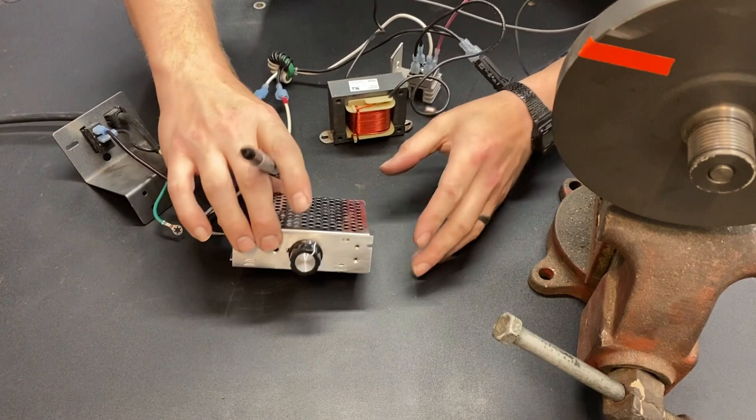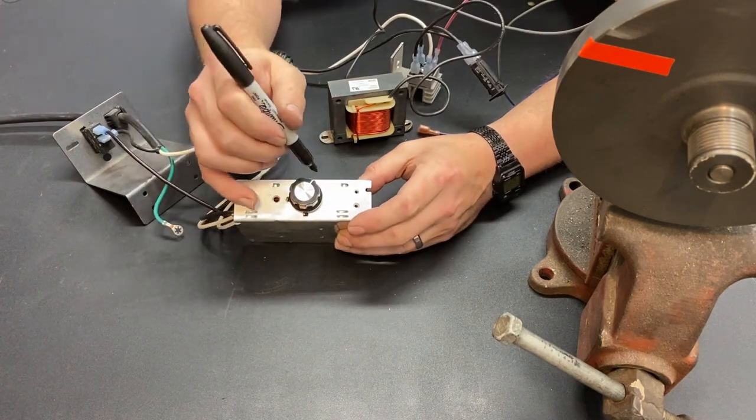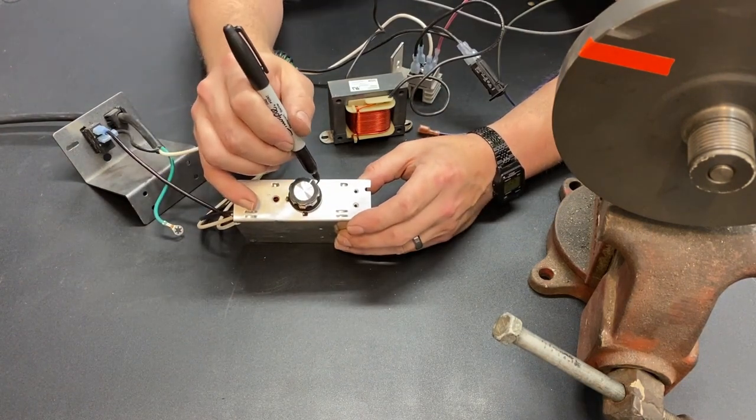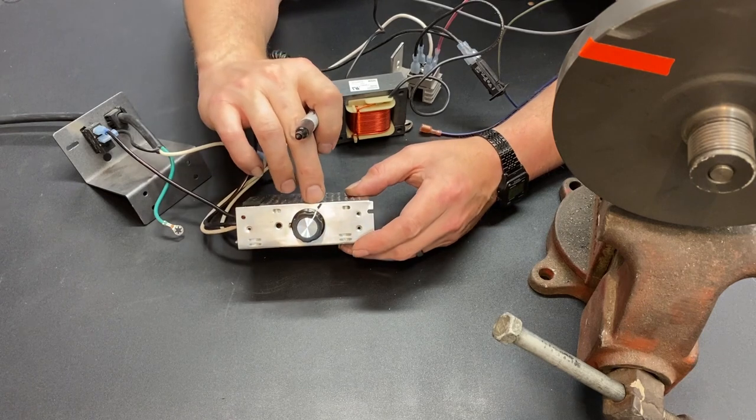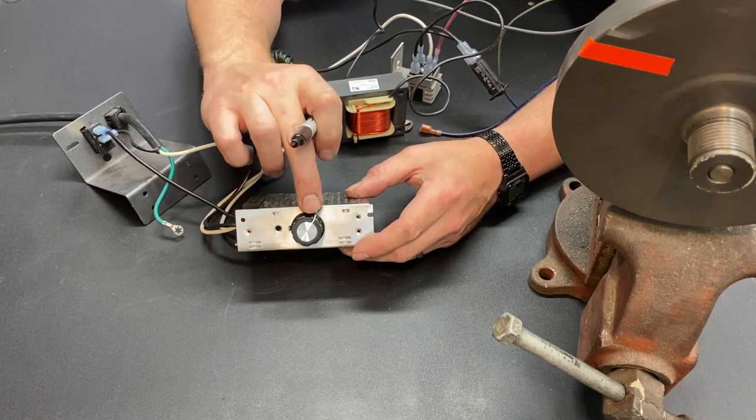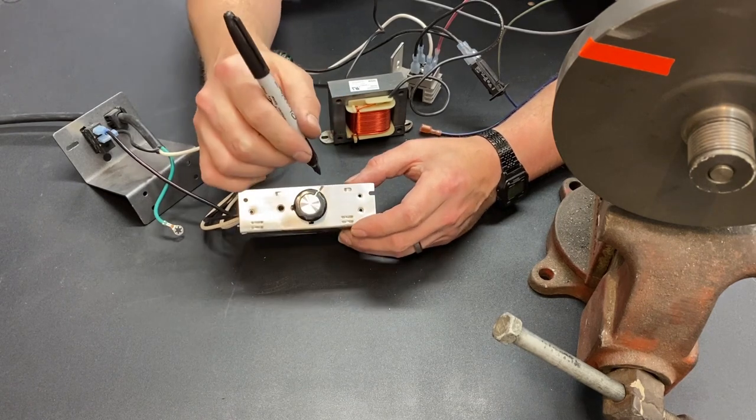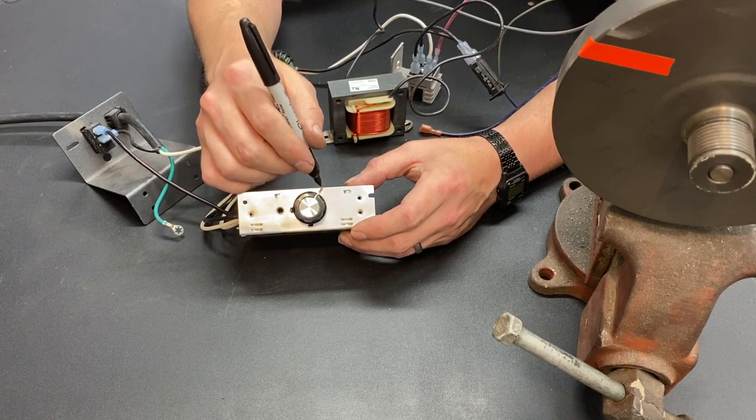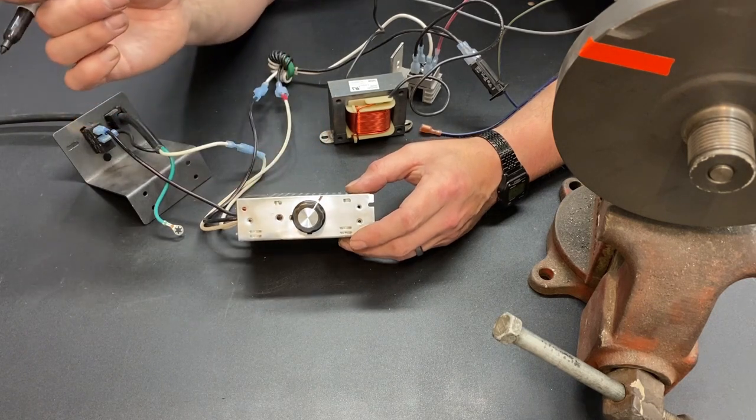I like to take a Sharpie, because it can be removed with a little rubbing alcohol or carb cleaner, and I'm now going to mark a line right there that lines up with the line on the knob, so that I know that this is the ohmage that I need for my replacement unit.